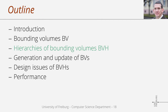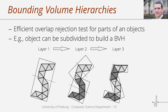Now we will see how to use bounding volumes in bounding volume hierarchies to accelerate collision detection tests. The idea is to use bounding volumes not only for an entire object but also for parts of an object, allowing efficient overlap rejection tests also for object parts. Hierarchies of bounding volumes are generated: we start with a bounding box for the entire object, then subdivide the object into parts and generate bounding volumes for these parts. This scheme is applied recursively and terminated when all object parts in a layer contain only a small number of primitives.